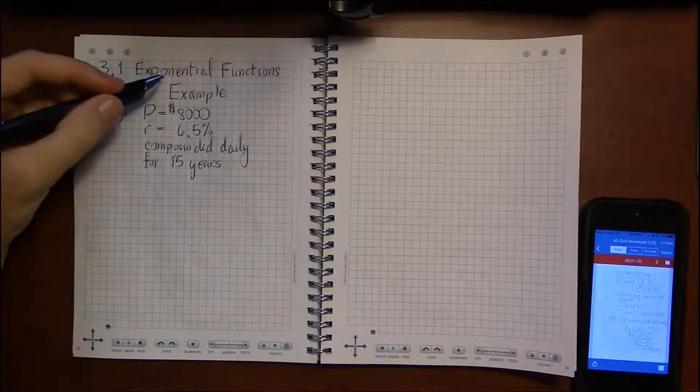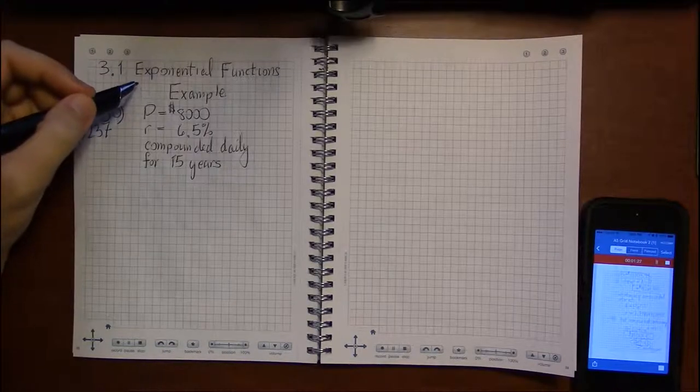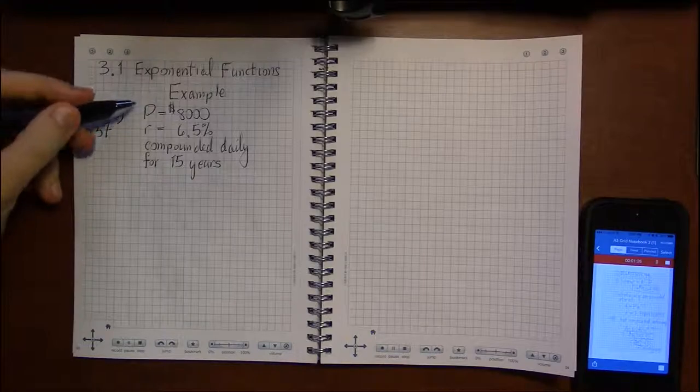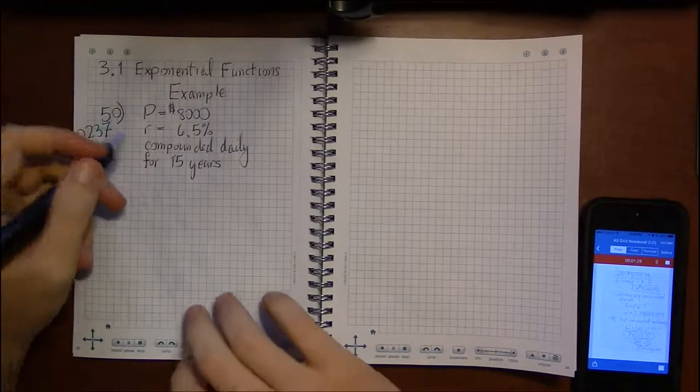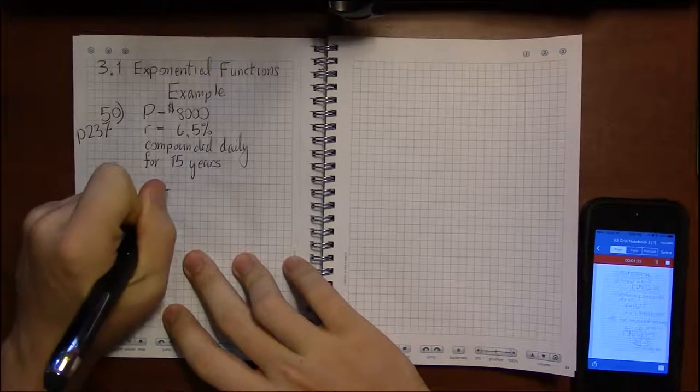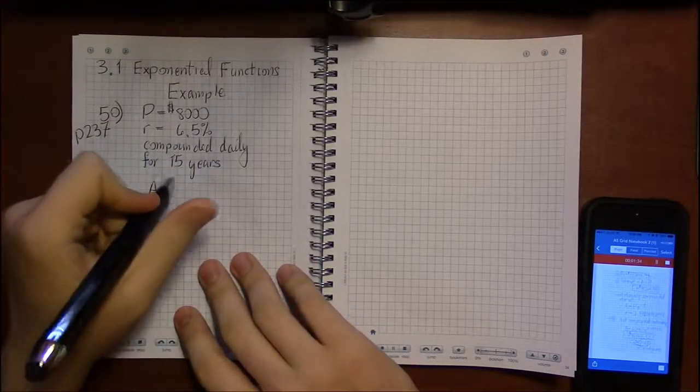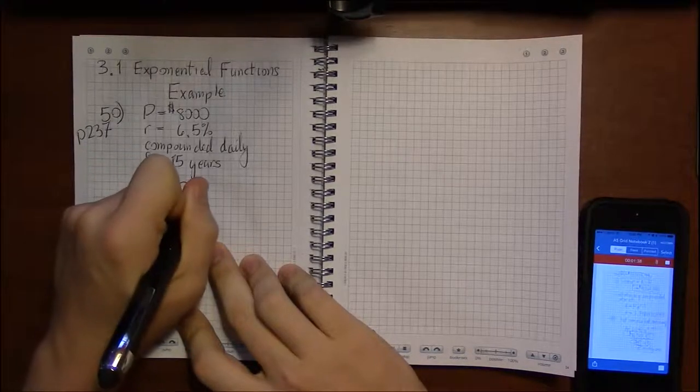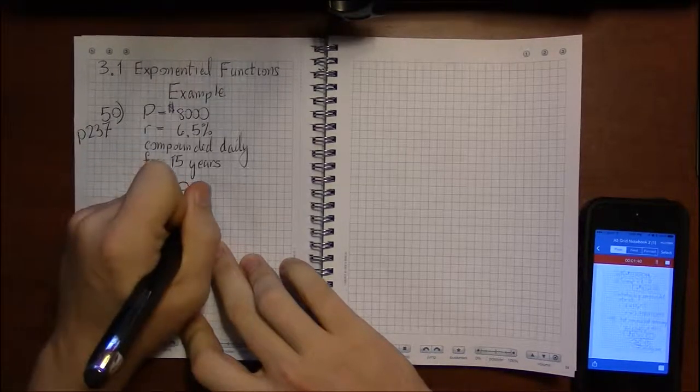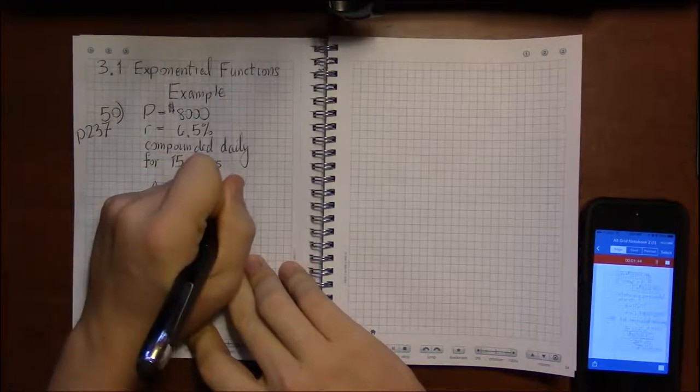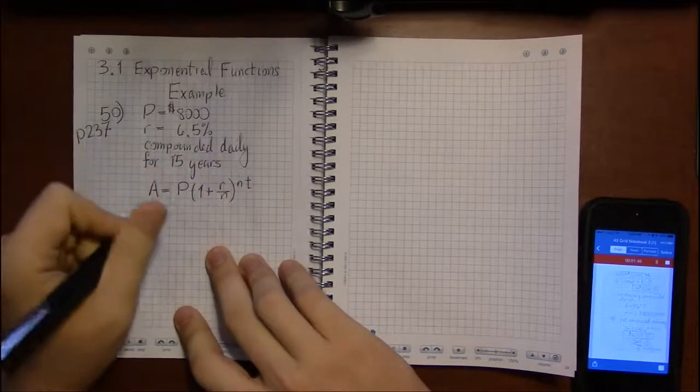Alright, let's take a look at some examples of exponential functions. So I'm going to stick with the compounding interest examples. Recall that the formula we're going to use when we're compounding a finite number of times per year is A equals P times 1 plus r over n to the n times t power.